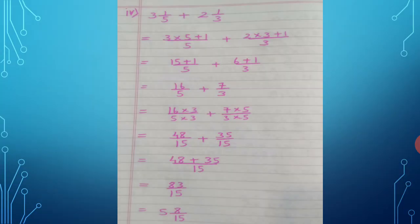Sum number 4: 3 and 1 upon 5 plus 2 and 1 upon 3. Convert: 3 × 5 + 1 upon 5, plus 2 × 3 + 1 upon 3. This gives 15 + 1 upon 5 = 16 upon 5, and 6 + 1 upon 3 = 7 upon 3. Denominators are 5 and 3 — we cannot add them directly.